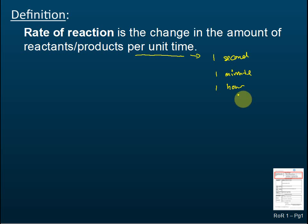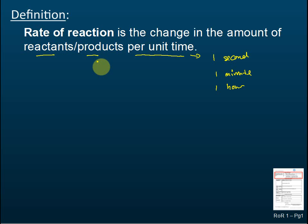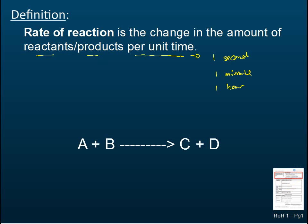Rate of reaction means how fast the reactants or products change in one unit of time — one second, one minute, or one hour. That is the definition and you need to memorize it.